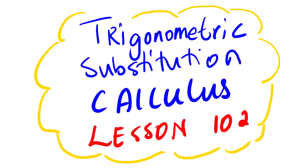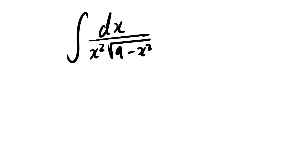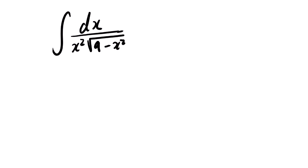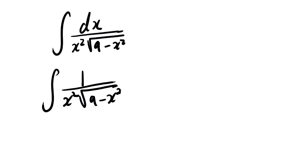Today's lesson we are going to look at trigonometric substitution calculus. This is lesson 102. In this question we need to find the integral of dx over x squared times square root of 9 minus x squared. We can rewrite this as the integral of 1 over x squared times square root of 9 minus x squared dx, and from there we need to generate our equation.